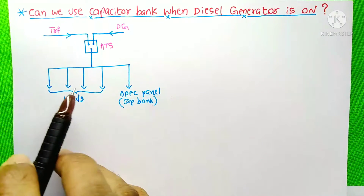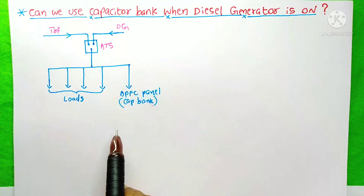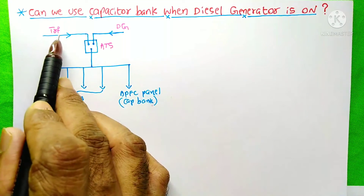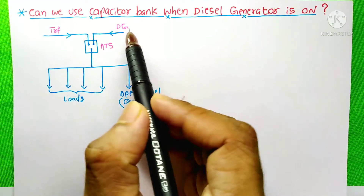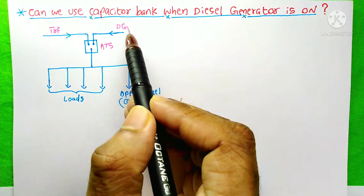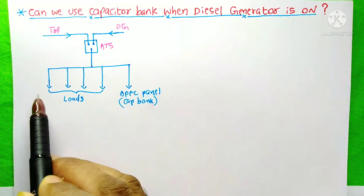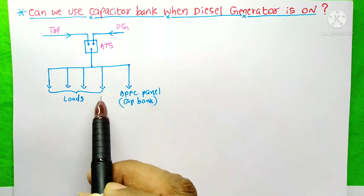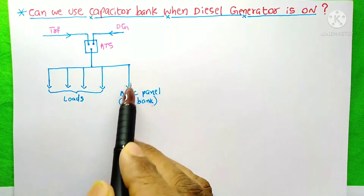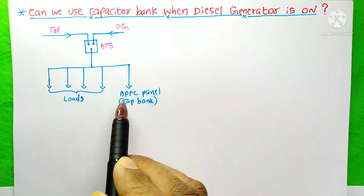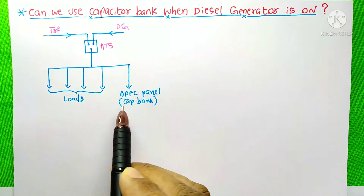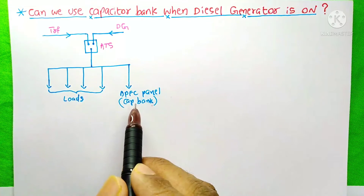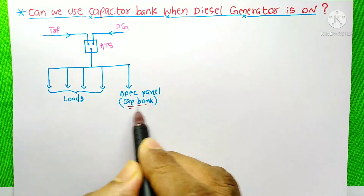Here I have just shown an electrical panel. One power supply is coming from a transformer and another from the diesel generator. There are several loads connected to this electrical panel, and one of the power feeds from this panel is going to the APFC panel — that means the automatic power factor correction panel, or what we call the capacitor bank.